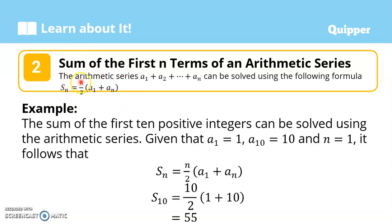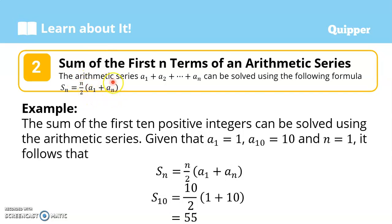So S sub n equals n over 2 times (A sub 1 plus A sub n). Our n is the specified number of terms. So if we are looking for the first 5 terms, our n is 5. If we are looking for the first 10 terms, our n is 10. Whatever your n is, that must also be the value of n here — n over 2. And then we multiply that by the first term and the last term.